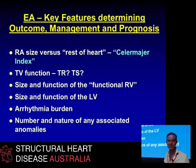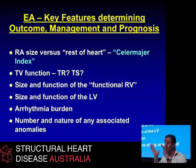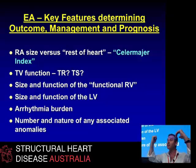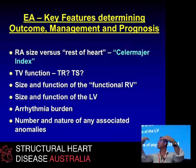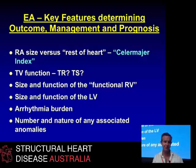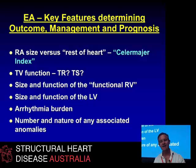You need to know the tricuspid valve function, the size and function of the functional RV — that bit of the RV that is pumping, that has myocardium. Even some of it will be above the valve. The valve is displaced, but the ventricular muscle is above where the valve is tethered. So when you put the valve where it's meant to be, you've still got some RV — and that's really critical. Also important: size and function of the LV, arrhythmia burden, and the number and nature of any associated anomalies.